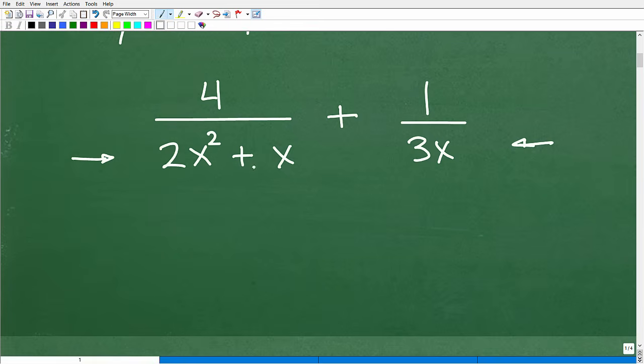If you want to kind of follow along in this video, I would pause the video and factor this expression and then just think about what the factors of this expression is right here. All right, so this expression, this denominator, I can factor out an x. So this would be x times 2x plus 1. So if you got that right, that's excellent. And then this is basically just 3x. That's the factors, 3 and x.